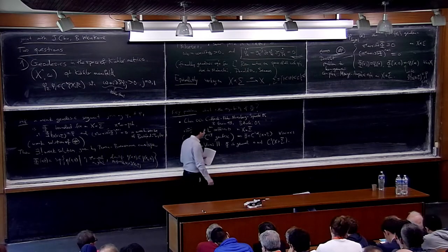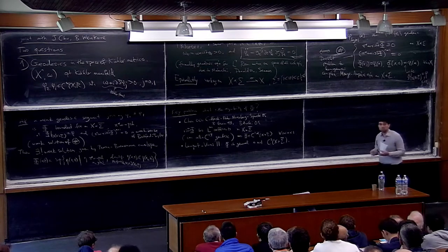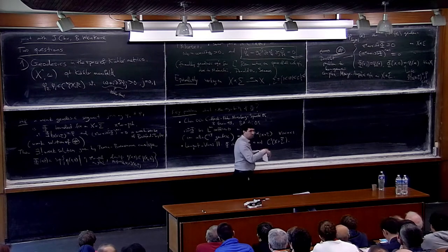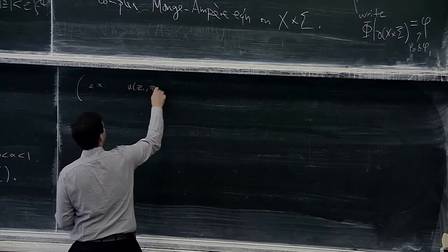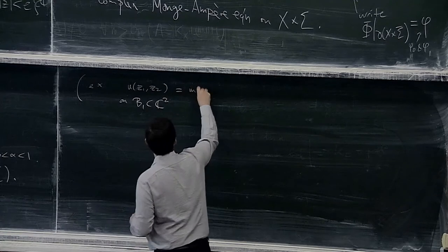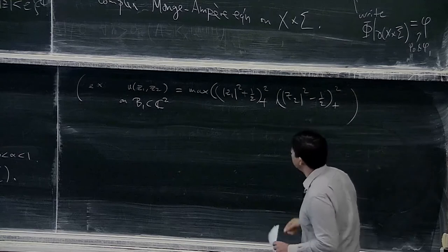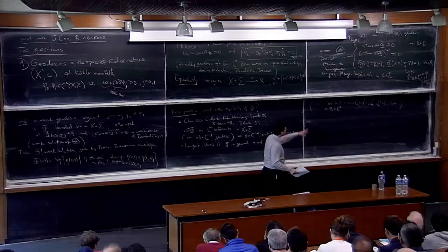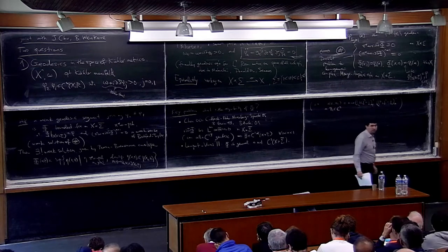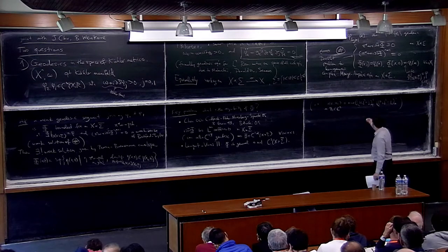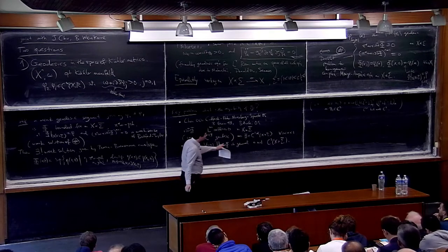You cannot hope to obtain a C-infinity solution, not even C^3. This is slightly expected, because in the local case — if you look at the same equation in a ball in C^2 — you can write down solutions that are not smooth with perfectly smooth boundary data. For example, u(z_1, z_2) = max{|z_1|^2 - 1/2, 0}^+ + max{|z_2|^2 - 1/2, 0}^+. This function on the unit ball solves a similar Dirichlet problem: it's plurisubharmonic, (dd-bar u)^2 = 0, the boundary data is real analytic, but u is only C^{1,1}, not C^2.